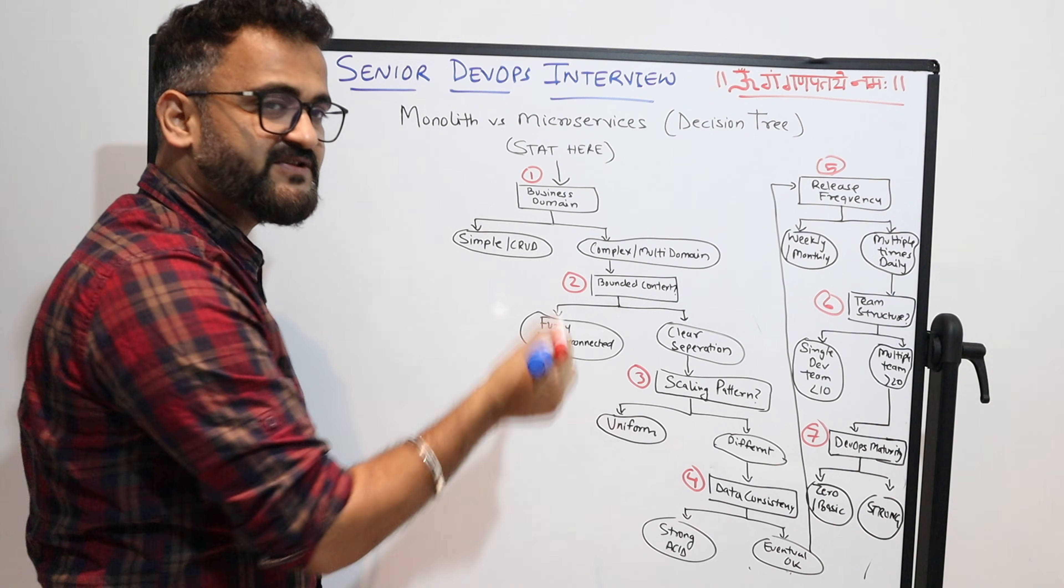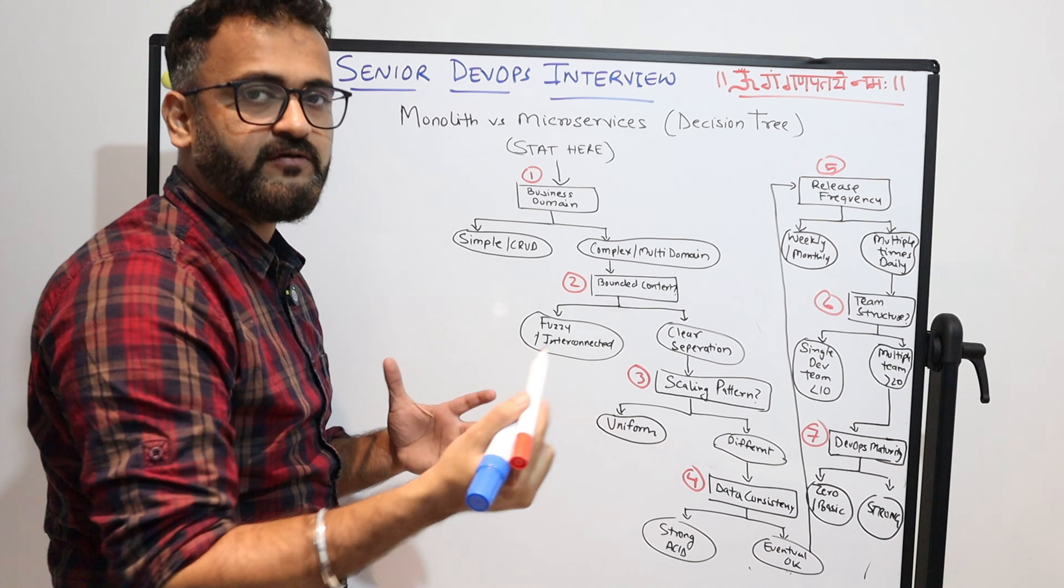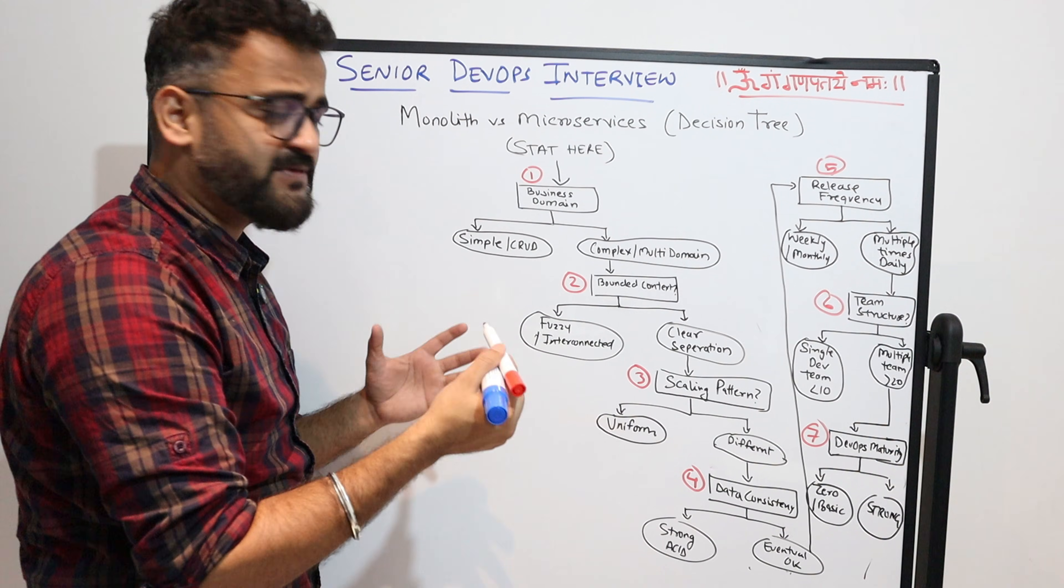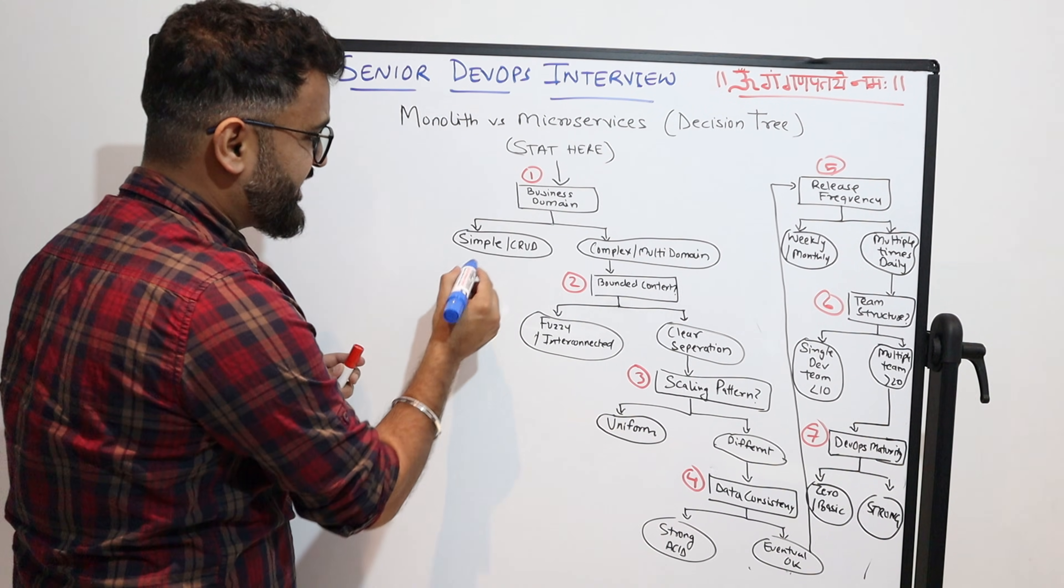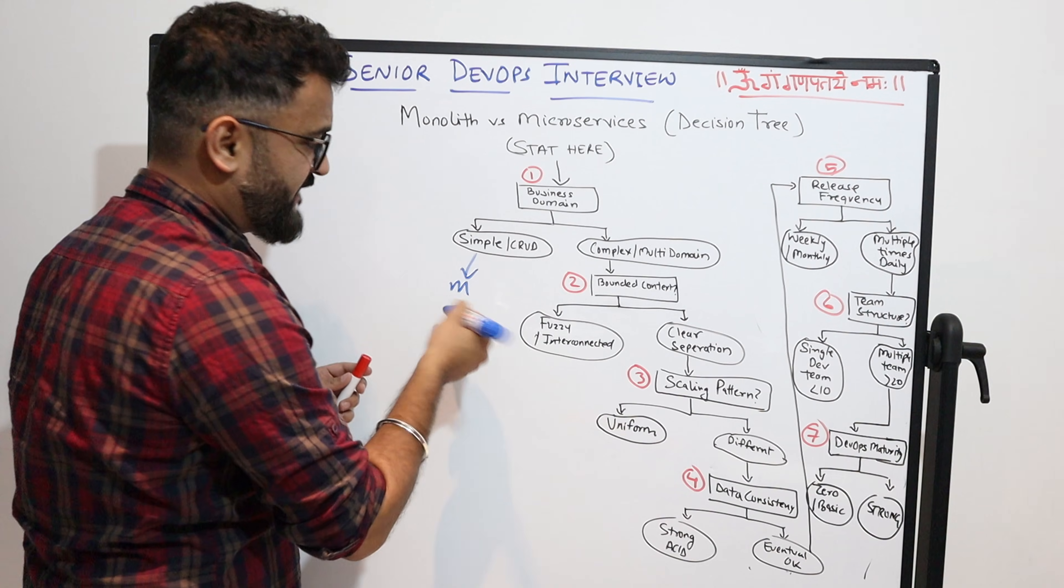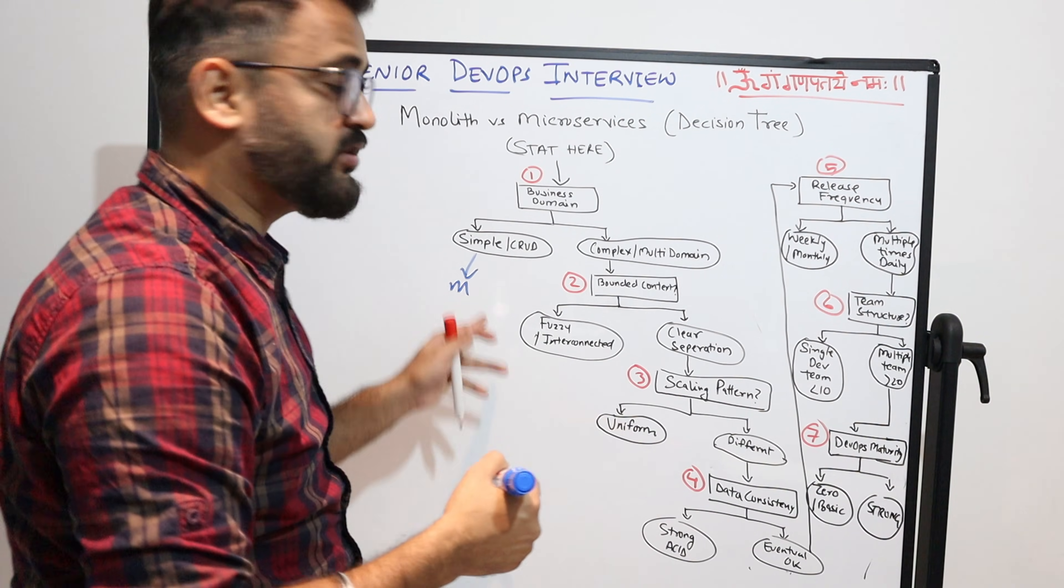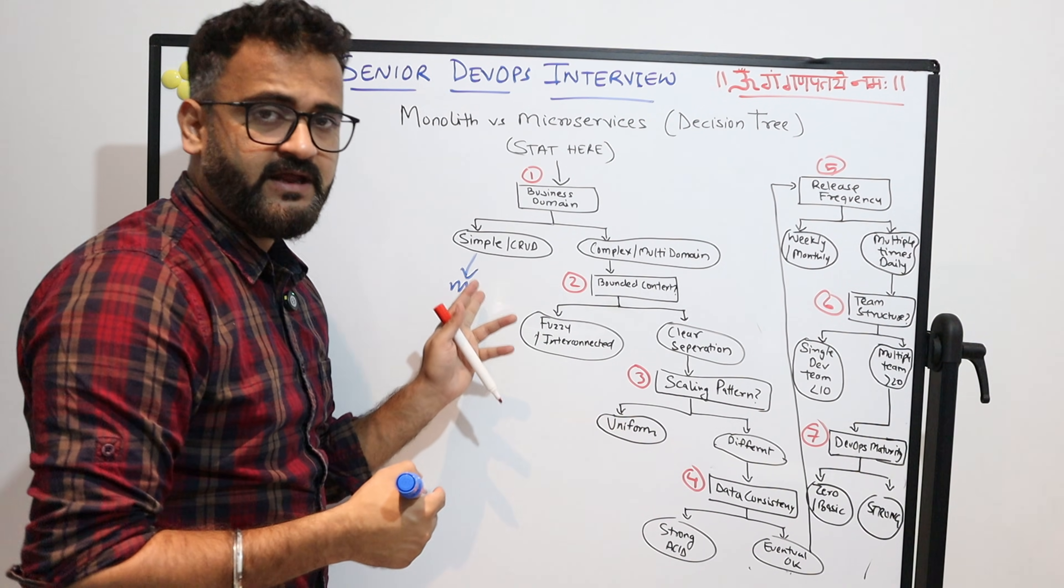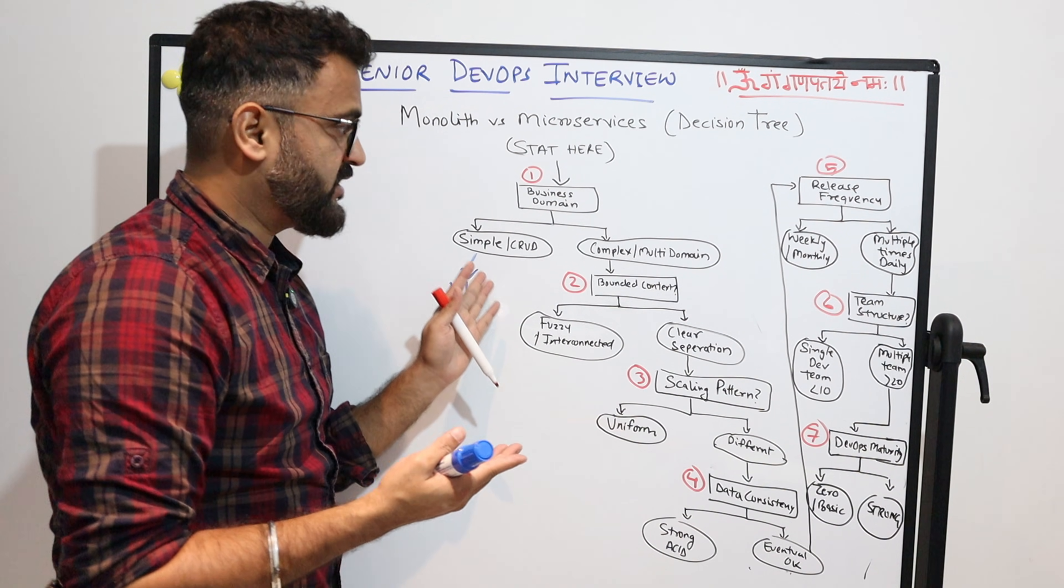Starting here, first of all you have to understand what is the business domain and what is the nature of that domain. Is it a simple CRUD application, a very simplistic application? If that is the case, then this can be monolith.